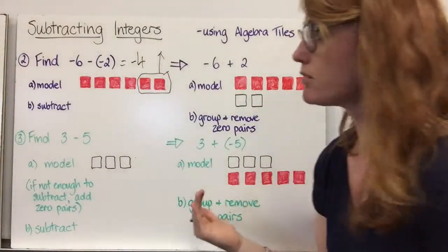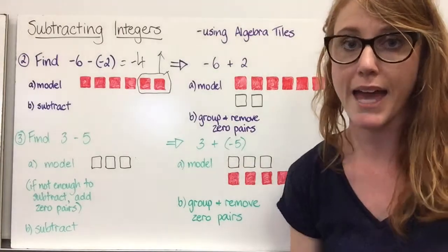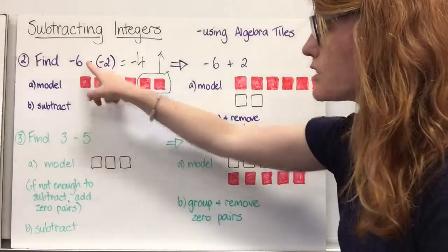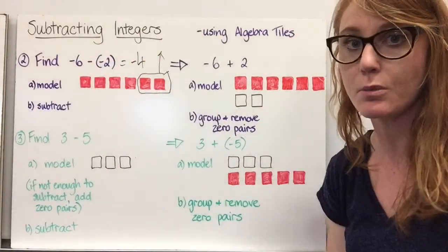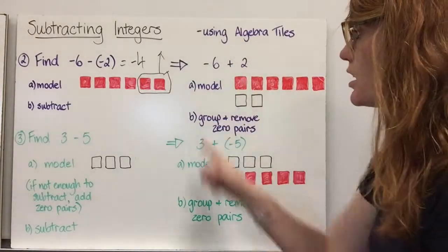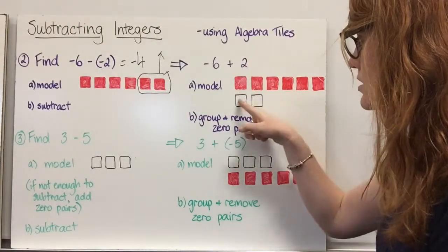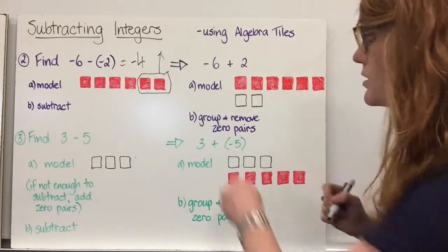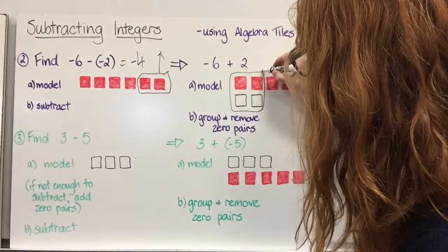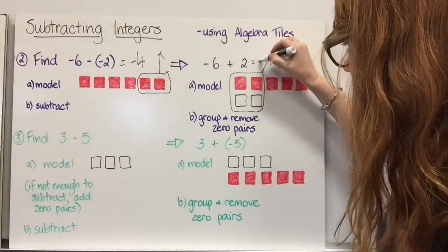Similarly, when we are subtracting an integer, we can find the same answer by adding its opposite. So instead of subtracting negative two, we're going to add the opposite of negative two, which is positive two. Now we have negative six plus two. We model that — negative six plus positive two — and group and remove the zero pairs. We are left with negative four.